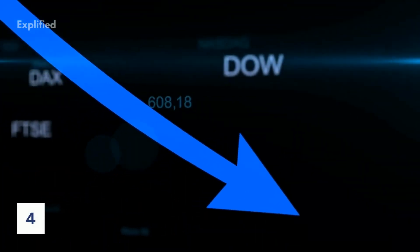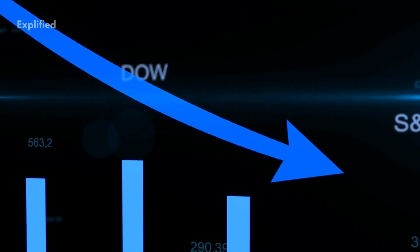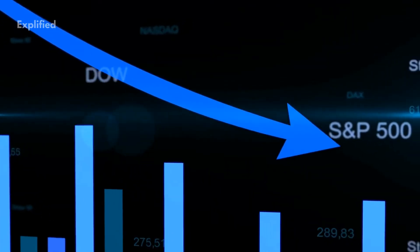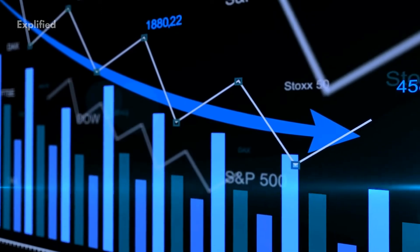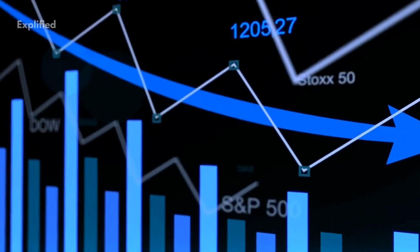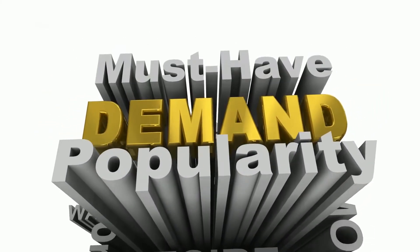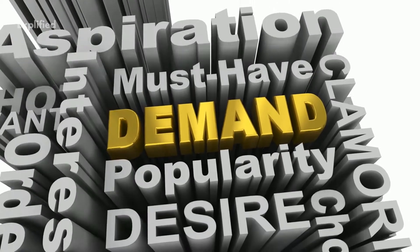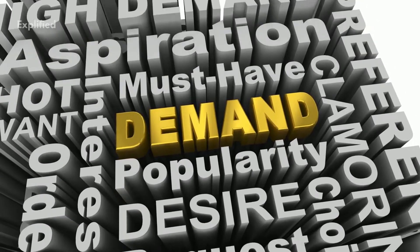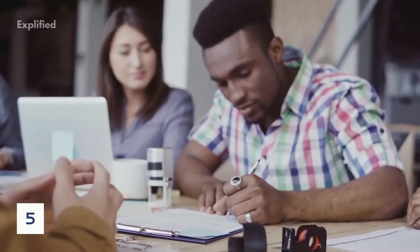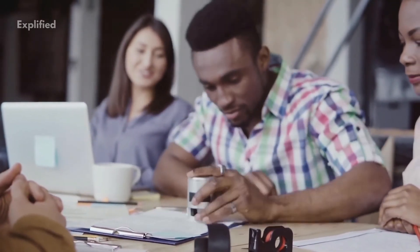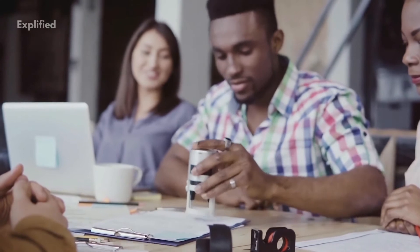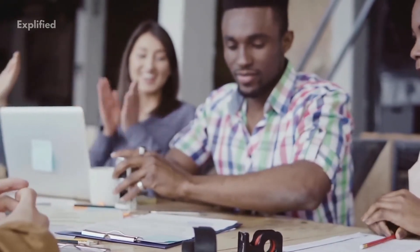A paradox of thrift: During recession, consumers adopt a rational approach which is risk-averse, fearing a possible recession. They increase savings and spend less. When this lower spending is aggregated, it leads to lower overall demand in the economy. According to Keynesian views, modifications in the aggregate demand, whether anticipated or unanticipated, have their greatest short-run effect on real output and employment, not on prices.